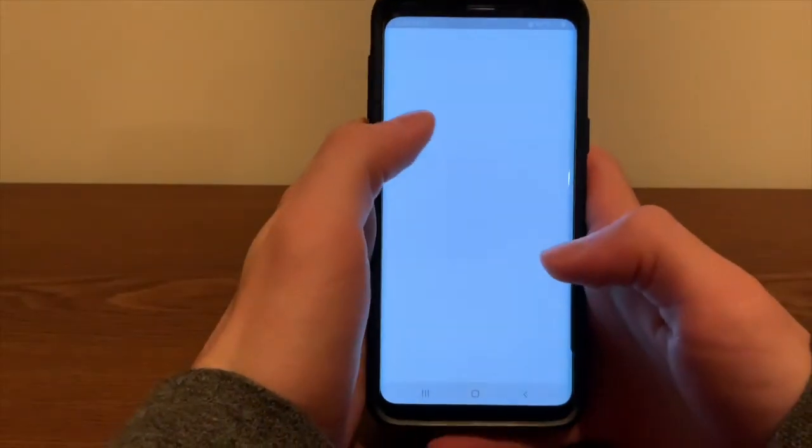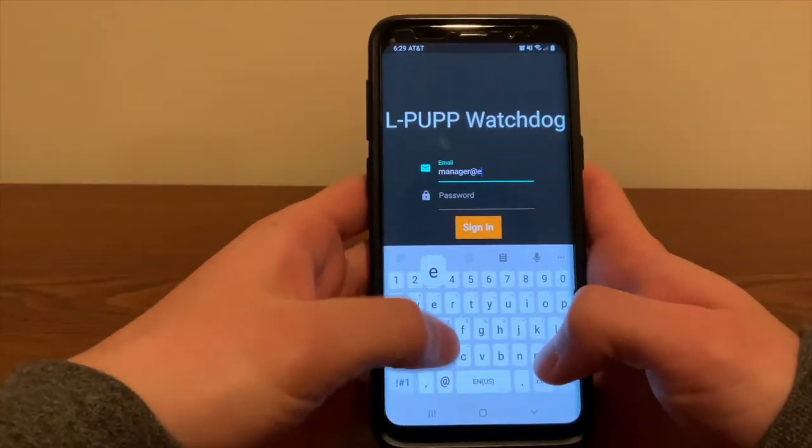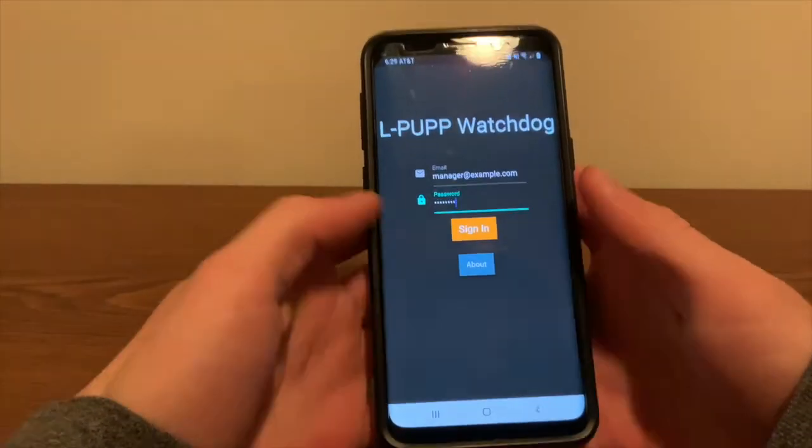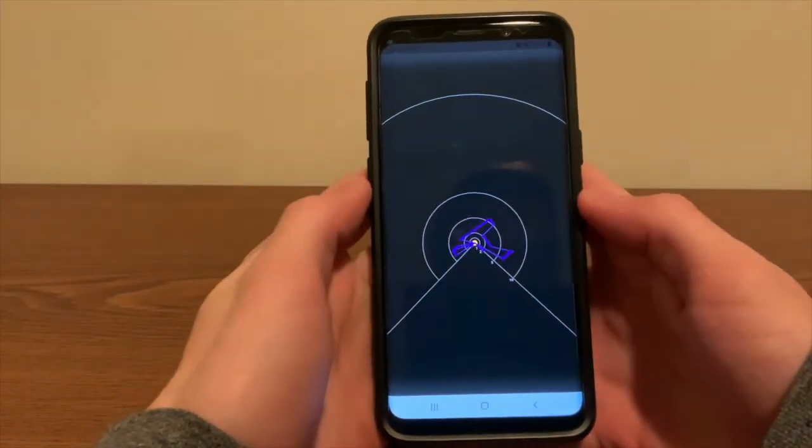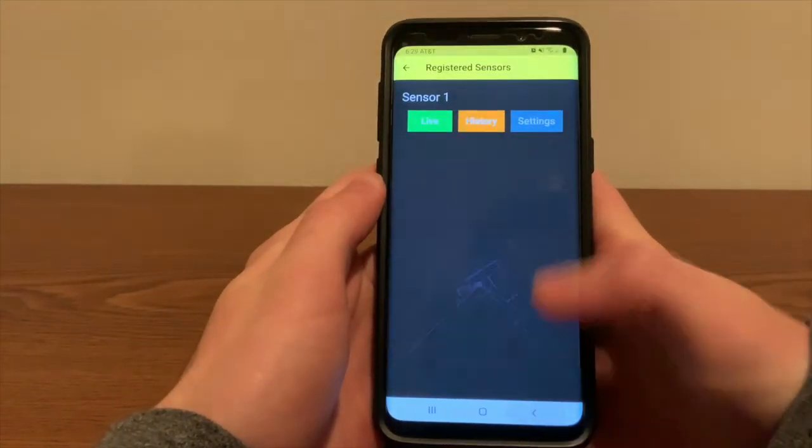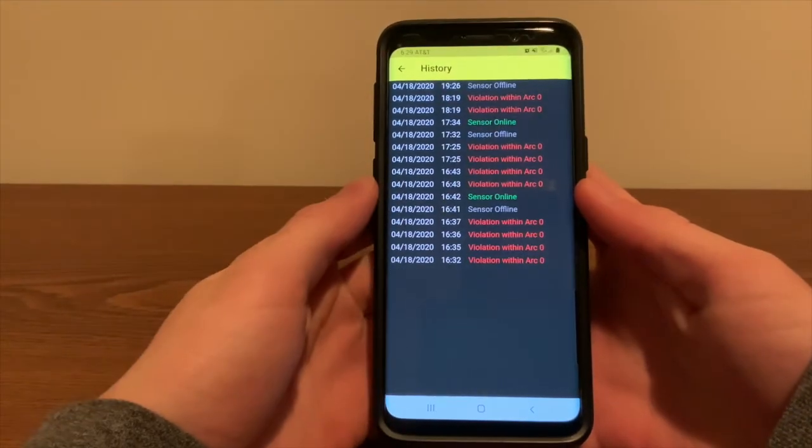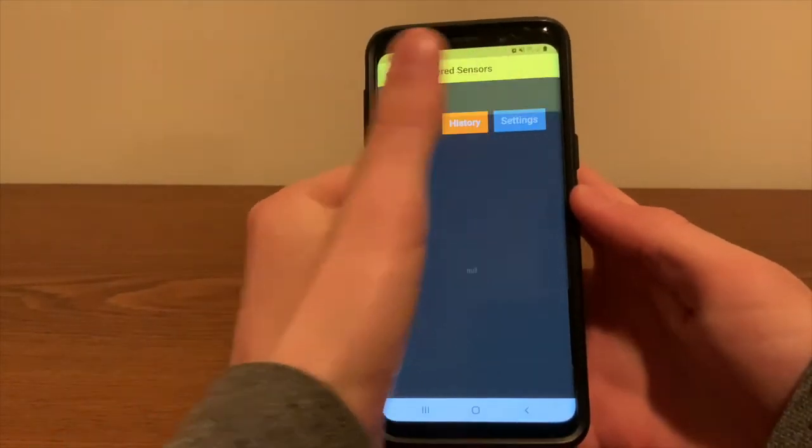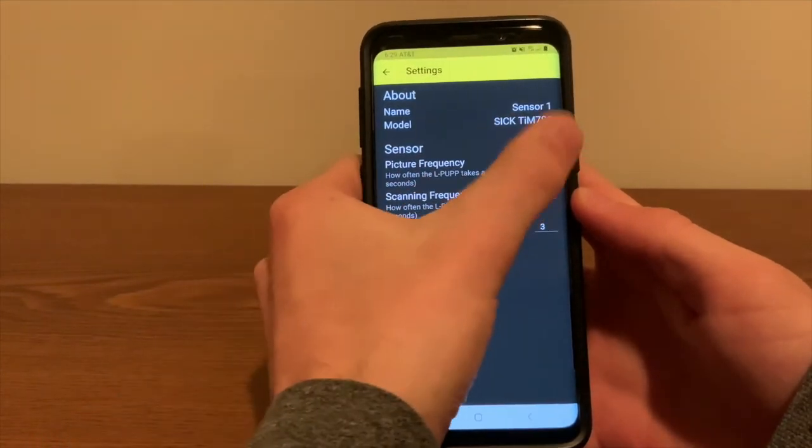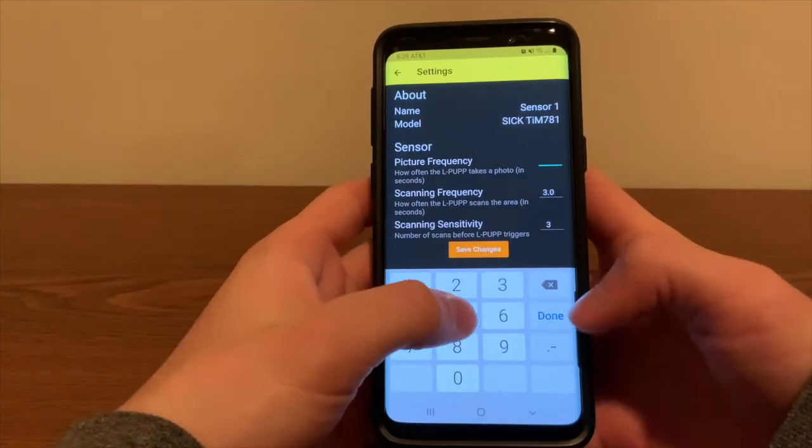Users can also log into their account and monitor LPUPs from a dedicated mobile application. The app allows users to log in and easily view LiDAR data from anywhere. Even when away from a computer, users will be able to view a history of violations and image captures, as well as make any necessary changes to device-specific settings.